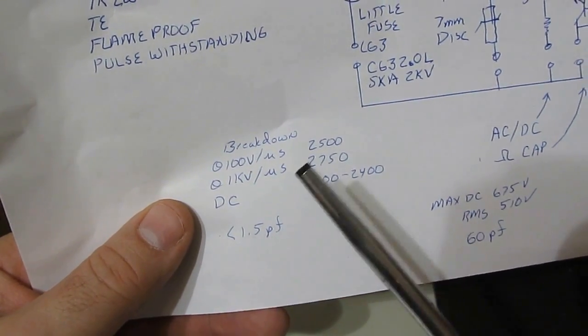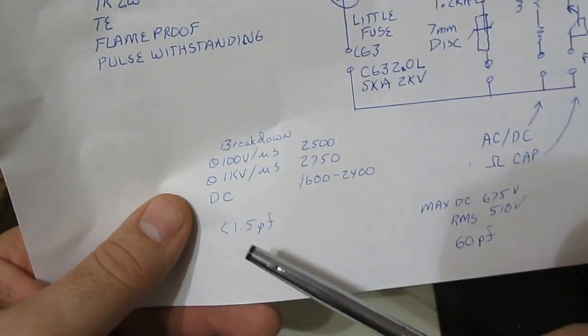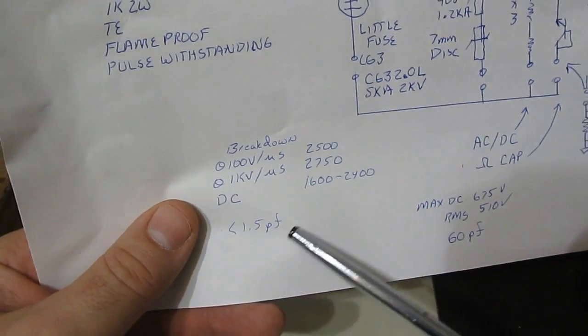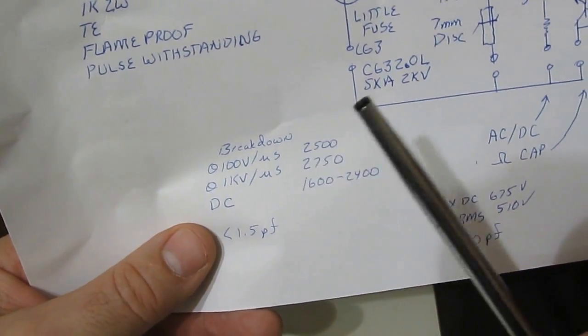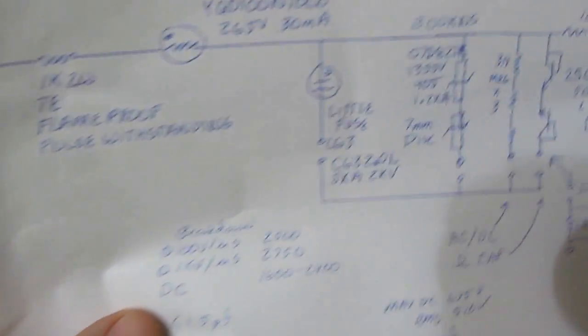This part has a capacitance of less than 1.5 picofarads. That's one of the benefits of using a gas discharge tube as they have very low capacitance. One of the downsides is they also switch very slow.